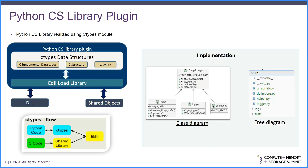Definitions.py contains all the declarations and definitions used in the implementation as per SNIA CS API definitions. For example, CS status is a Python dictionary which has all the return codes that can come from the SNIA CS API library. Apart from the return codes, input-output structures are also defined here as classes. A custom logger module is also defined, which dumps all required logs into directed folders as the framework is invoked and executed. In development, we follow PEP8 encoding standards and nomenclatures, and all APIs and other definitions are kept the same as the SNIA CS library for synchronization.